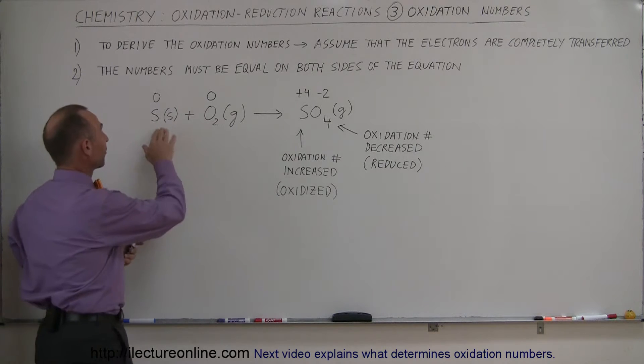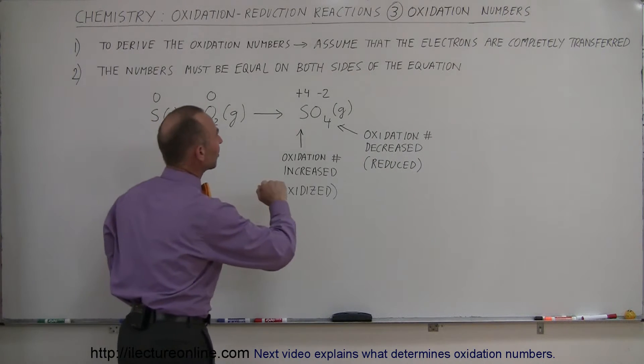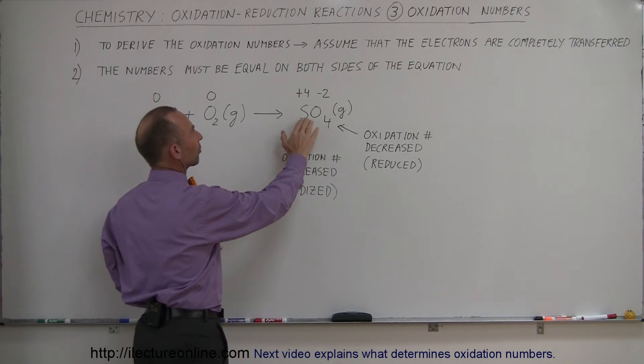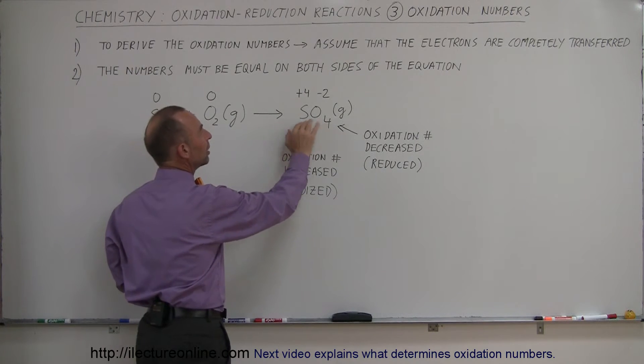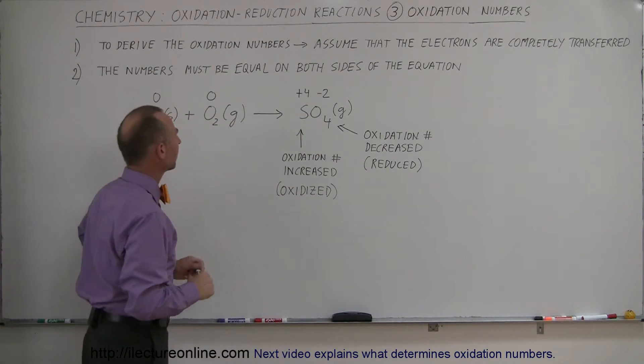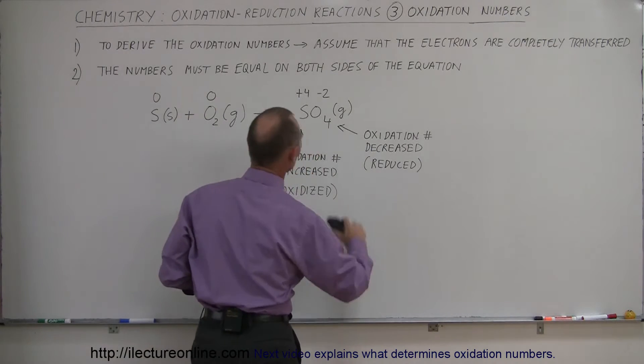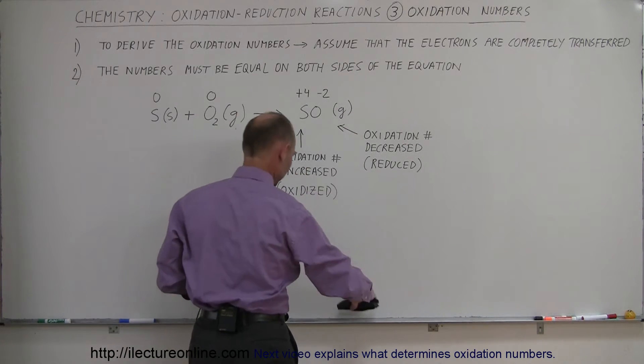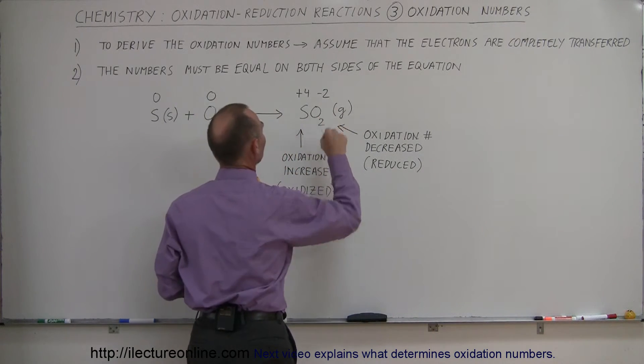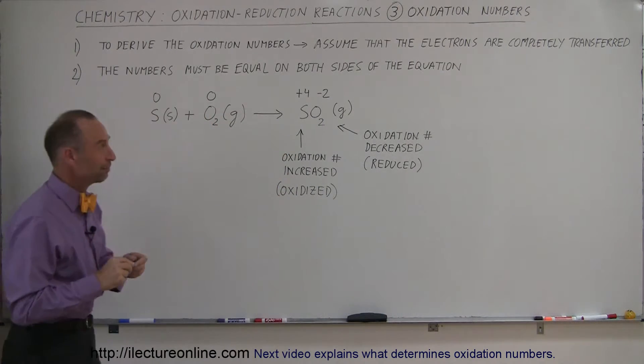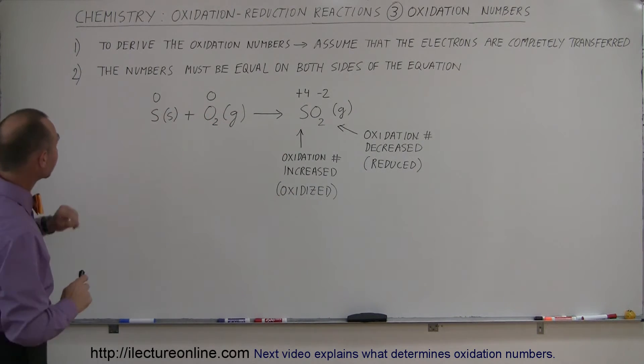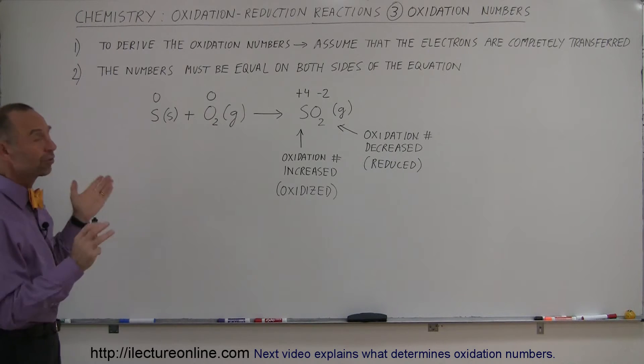In this case we have sulfur and oxygen, and we're assuming that the electrons will be completely transferred from the sulfur atom to the oxygen atoms. That's the wrong number right there - that would be a very strange molecule indeed. It's actually sulfur dioxide we're dealing with. Secondly, the numbers must be equal on both sides of the equation.